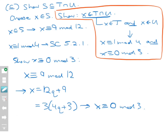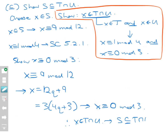So what I've shown is that if X is in S — meaning it's 9 mod 12 — then X is 1 mod 4 and X is congruent to 0 mod 3. That gives us X belongs to T and to U at the same time, and therefore X belongs to T intersect U. Therefore S is a subset of T intersect U, because I've chosen an element out of S and shown it belongs to T intersect U. That ends the first half of the proof.